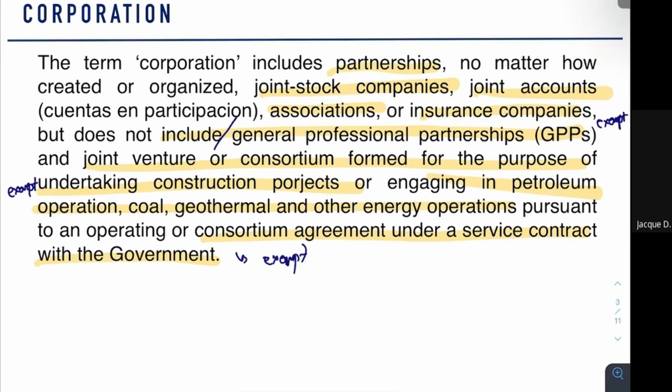So we have three exclusions: general professional partnership, a joint venture for construction or petroleum operations, and any agreement under a service contract with the government — all considered exempt. All other entities are taxable and within the ambit of the term corporation, taxed under corporate income taxation.